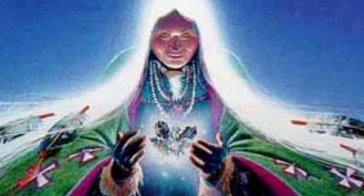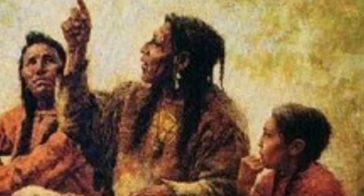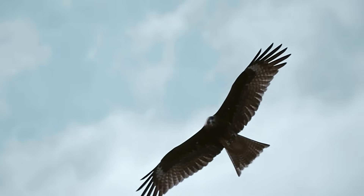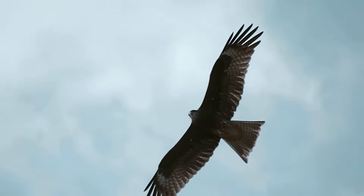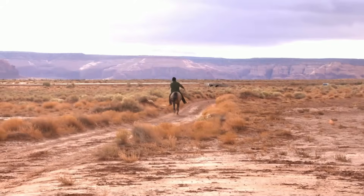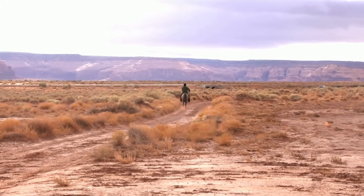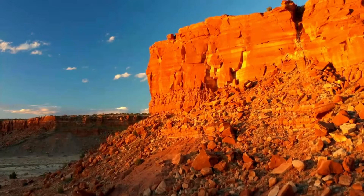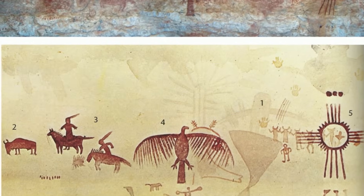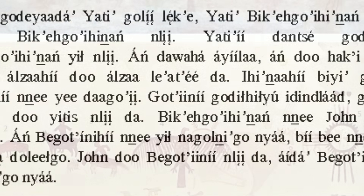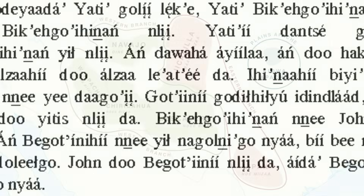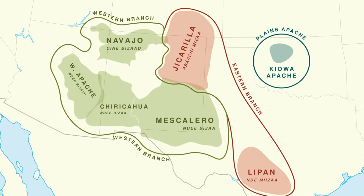Apache oral traditions and storytelling reveal sophisticated theological and philosophical concepts that reflect both ancient heritage and local innovation. Apache creation stories describe the emergence of the first people from underground worlds, their relationships with supernatural beings, and the establishment of proper relationships between humans, animals, and spiritual forces. These narratives share structural similarities with other Na-Dene oral traditions, suggesting ancient connections that parallel genetic relationships, while also incorporating detailed knowledge of southwestern landscapes, plants, and animals.